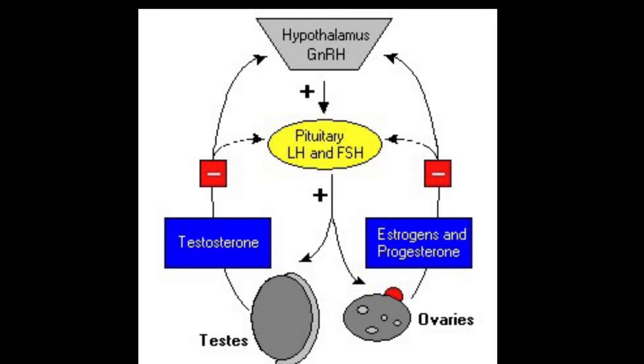In men, gonadotrophin-releasing hormone stimulates the production of luteinizing hormone from the pituitary gland. LH attaches to receptor cells in the testes, which starts the production of sperm cells.